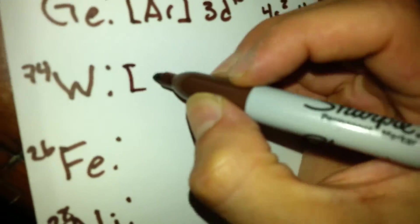For W, we are getting for tungsten, which has a number of 74. For tungsten, we are going to be using xenon, which has 54.